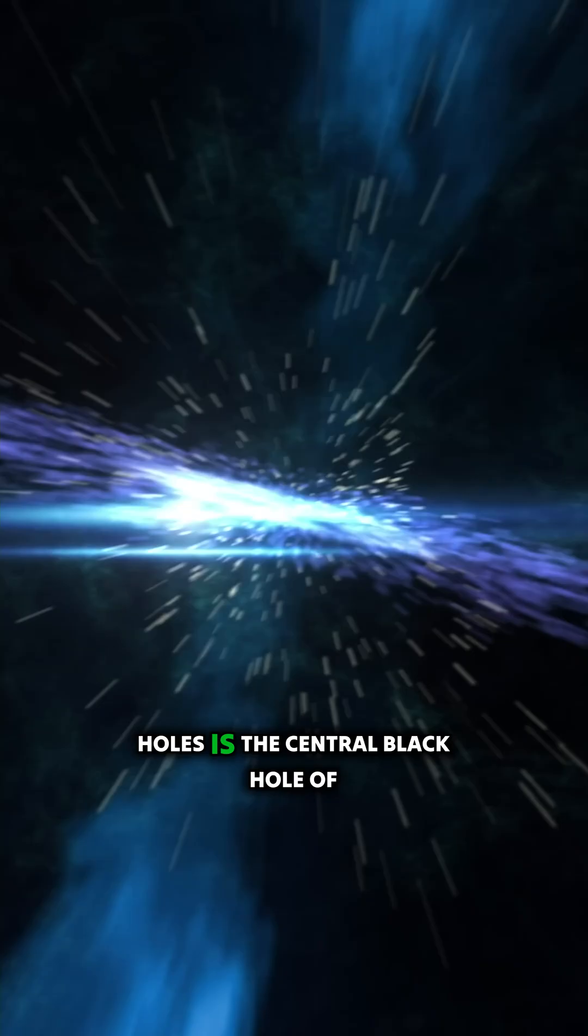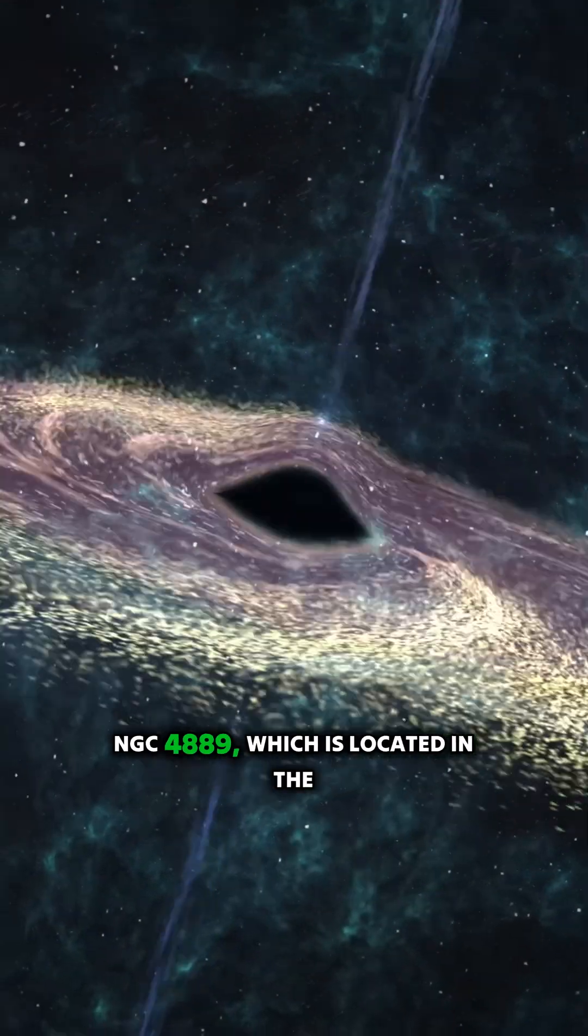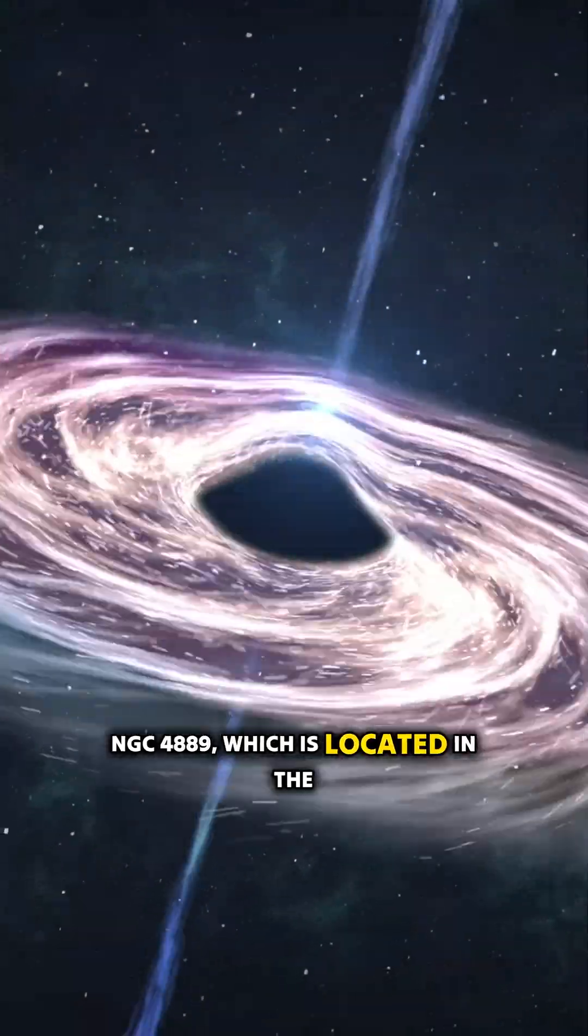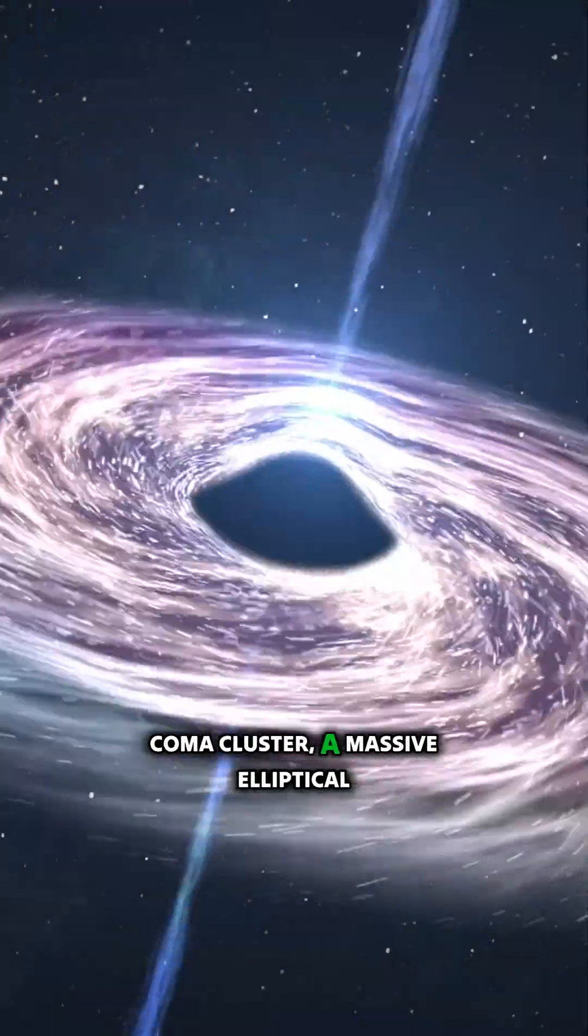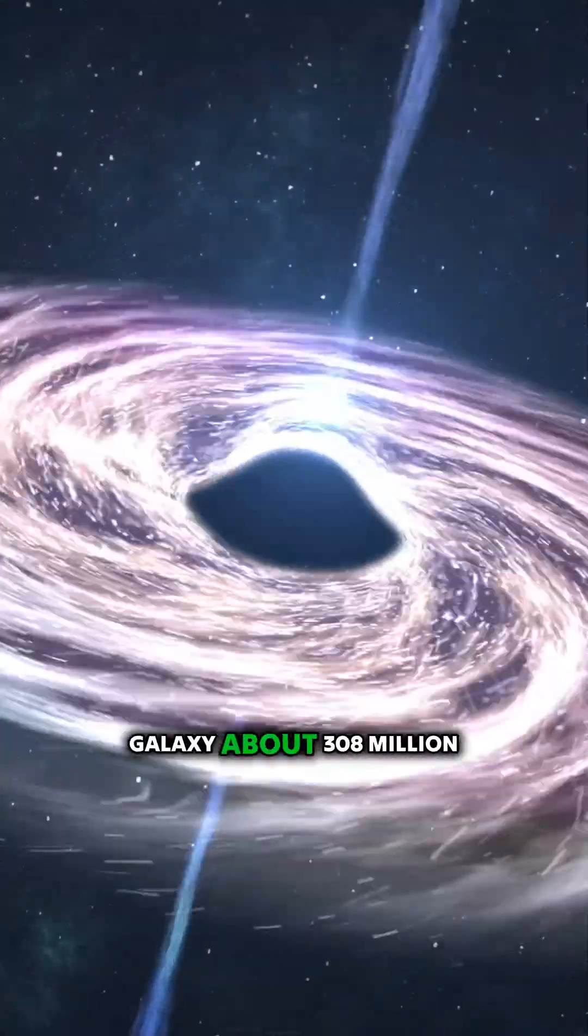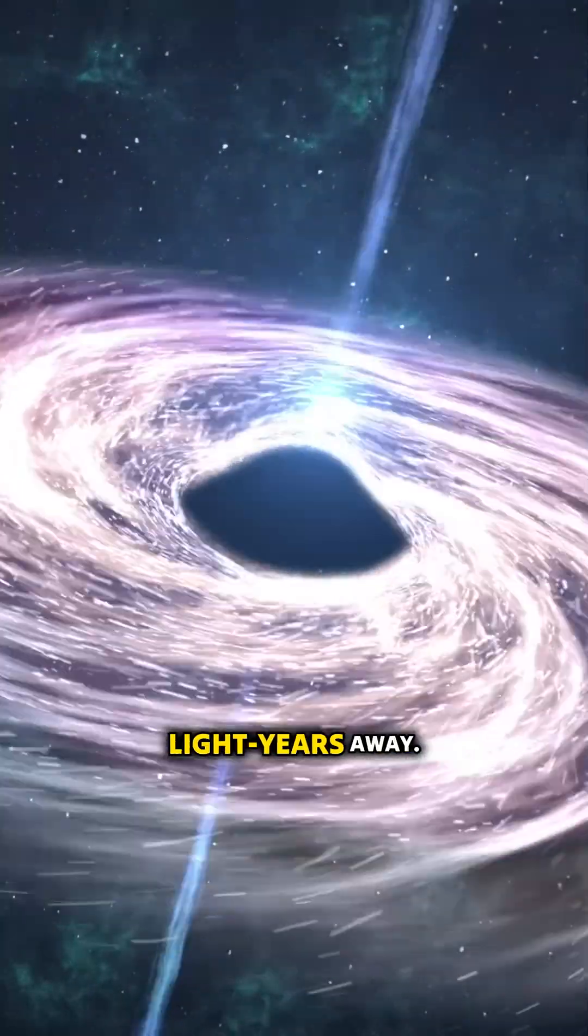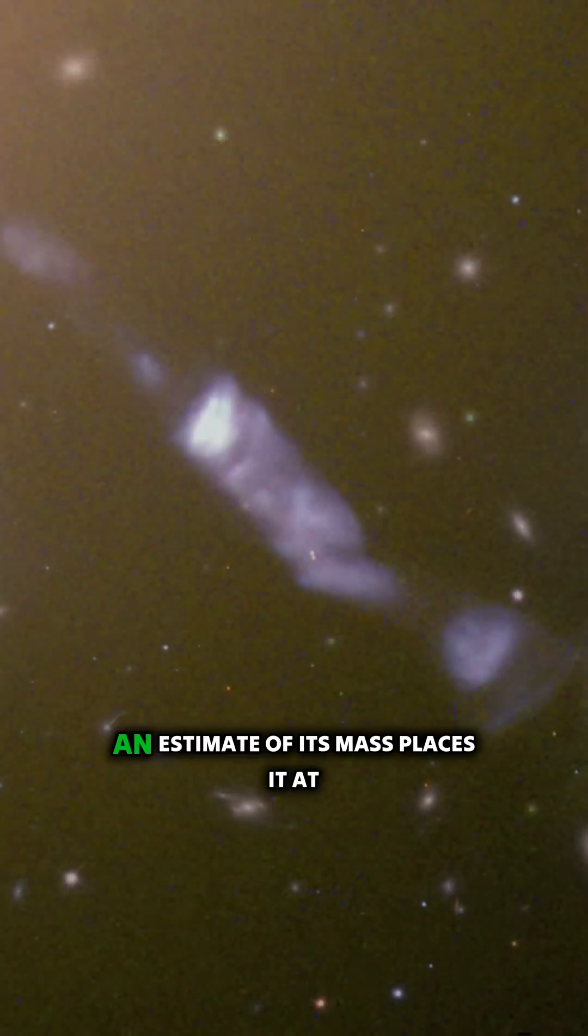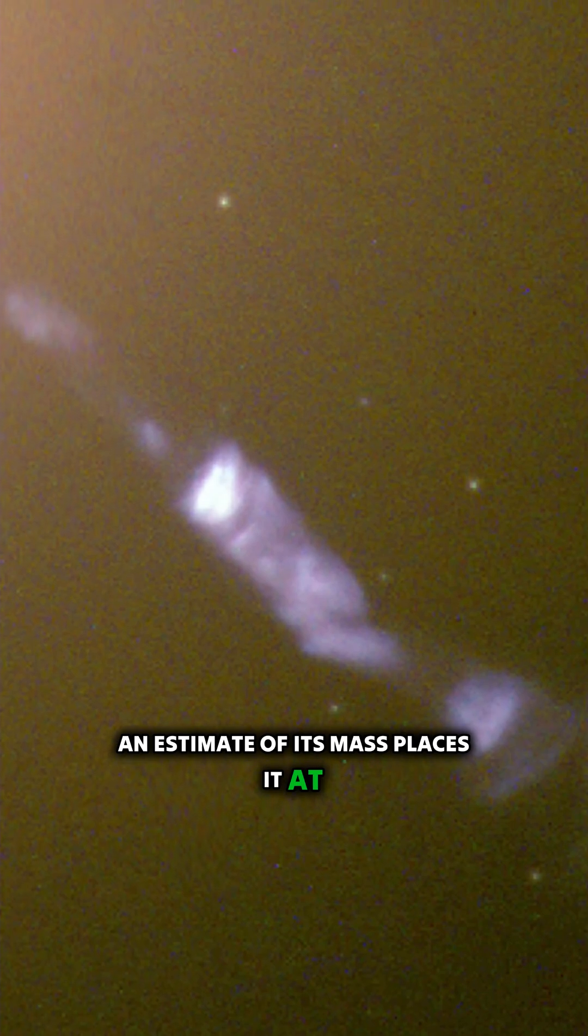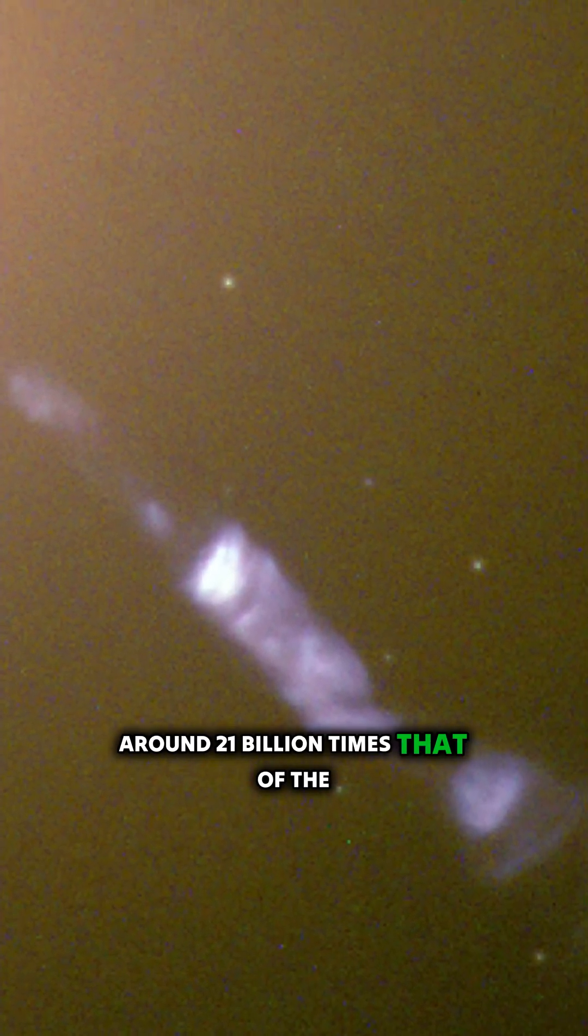One of the largest known black holes is the central black hole of NGC 4889, which is located in the Coma Cluster, a massive elliptical galaxy about 308 million light-years away. An estimate of its mass places it at around 21 billion times that of the Sun.